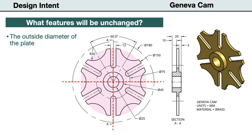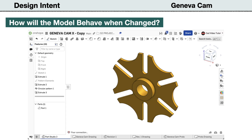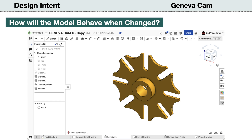Next, let's identify the features that should remain unchanged after a revision. The outside diameter of the plate will remain the same. The circular symmetry, as viewed in the front view, will be maintained when revised. So while modeling the part in Onshape, we want to consider the order that features are created and constrained to ensure that when the model is revised, it will update predictably without errors.